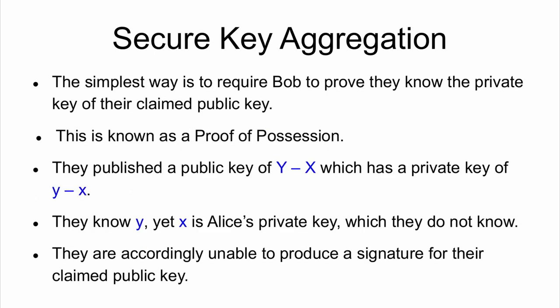The trick is to use secure key aggregation to stop these attacks. The simplest way is to require Bob to actually prove they know the private key of whatever public key they're claiming — this is known as proof of possession. They published a public key of Y minus X, so the private key is also Y minus X. They know Y because that's their private key, but X is Alice's private key. They don't know it. Therefore, they can't produce a signature and say, 'I'm real, I exist.'